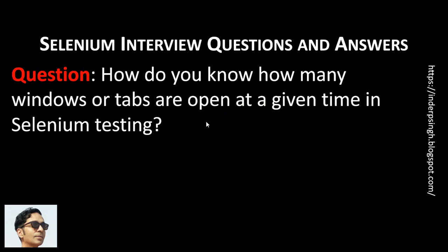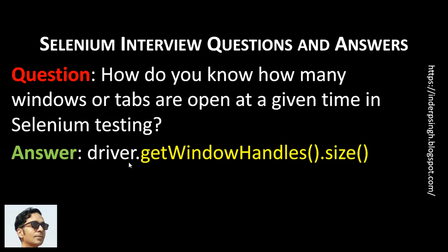Next, in automation testing questions and answers: how do you know how many windows or tabs are open at a given time in Selenium testing? driver.getWindowHandles.size gives the number of open windows or tabs. So if the size is one, that means exactly one window or tab is open.